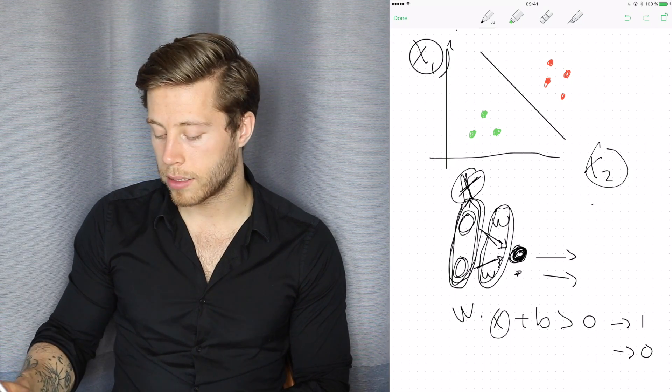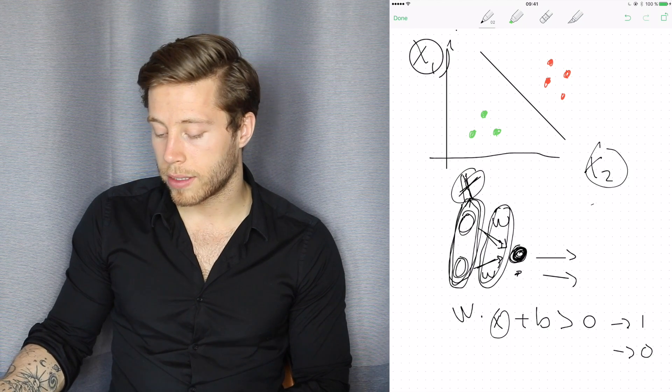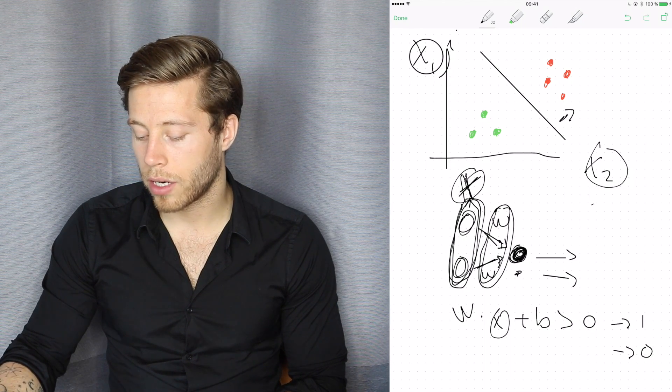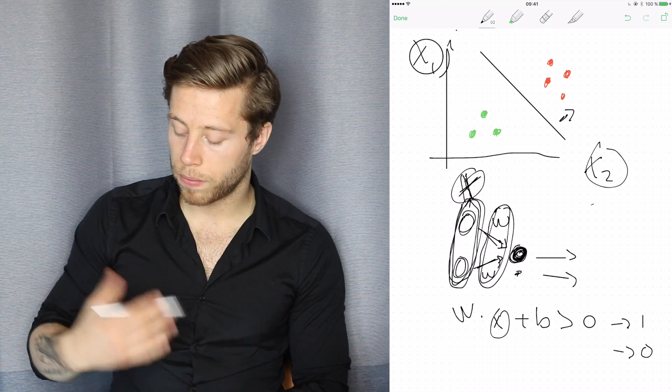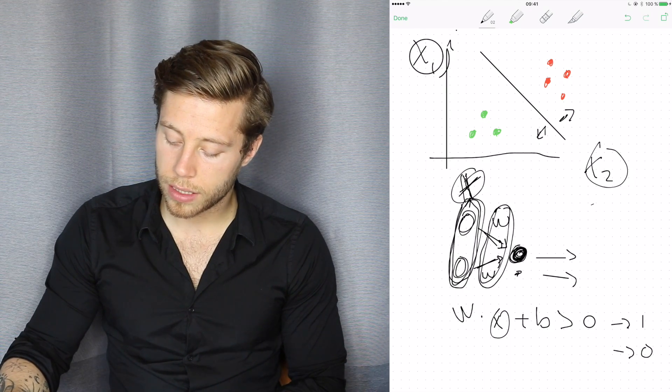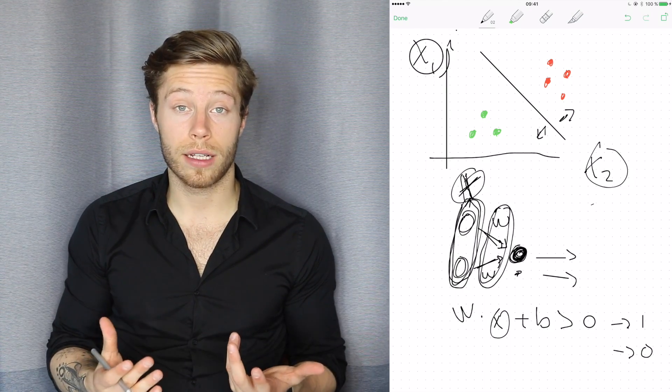And looking at this, now we can easily classify points. Because if we have a point X or our input vector X and we multiply it with our weights and we take the plus B, if it's larger than zero, then it's on this side of the line. If it's lower than zero, then it's on this side of the line. So then we know how we can classify these. And that's how the algorithm works.